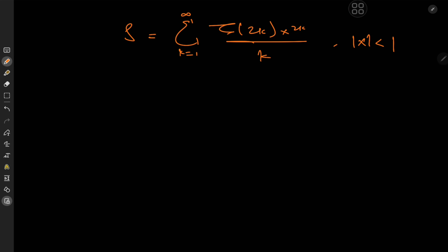Welcome! Today we have a really cool infinite series involving the Riemann zeta function — it's been quite a while since I evaluated one of these. We have the sum over k from 1 to infinity of zeta(2k) times x to the 2k over k, where the absolute value of x is less than 1.